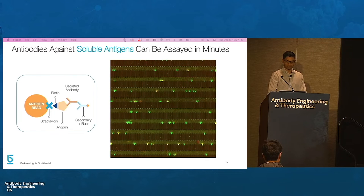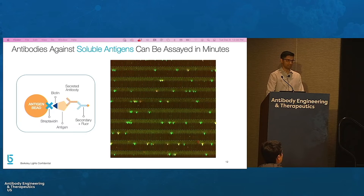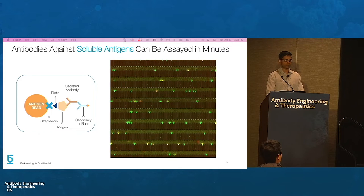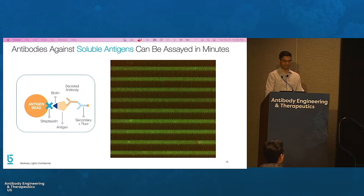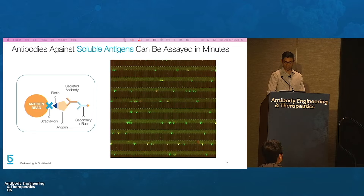Nanopens enable rapid, precise, and highly sensitive assays. The small volumes enable secreted antibody concentrations to reach detectable levels in a matter of minutes. In the assay depicted here, secreted antibodies from mouse plasma B-cells diffuse out of the pens and bind to antigen-coated beads, which then sequester a secondary antibody. This results in a fluorescent halo or bloom centered on antigen-specific plasma B-cells. The assay is performed on tens of thousands of cells simultaneously — this is just a single field of view in which hundreds of cells are screened to identify dozens of hits.